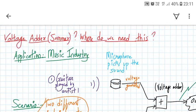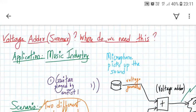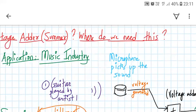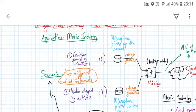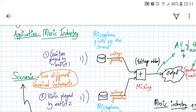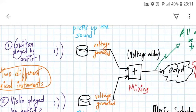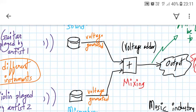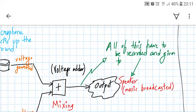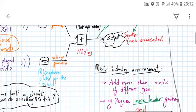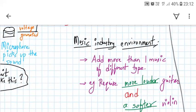Where do we use such a voltage adder or a summer? The application is in the music industry. Consider a scenario where you have two musical instruments: a guitar played by artist number 1 and a violin played by artist number 2. These two instruments emit sound, picked up by two microphones which convert the sound signal into electrical voltage. We need to mix these two sounds together using a voltage adder — called a mixing stage in the music industry — which adds the two voltages and outputs the combined music to a speaker.